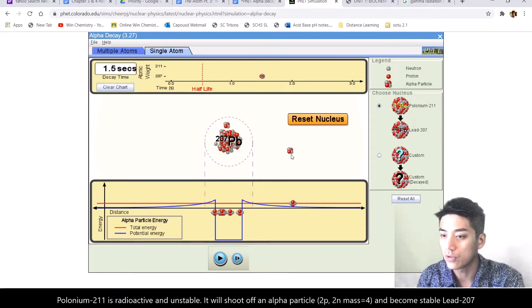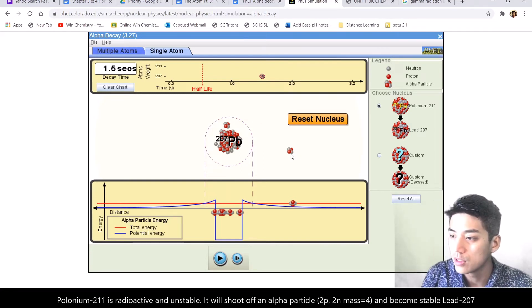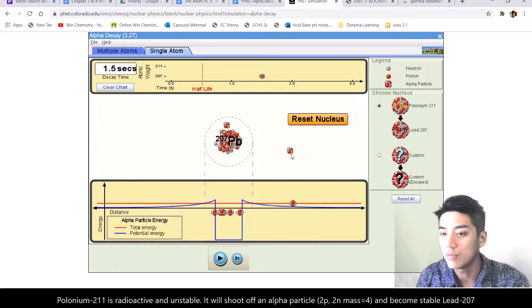It shot off an alpha particle, which is basically two protons and two neutrons. So it lost a mass of four. So 211 became 207.